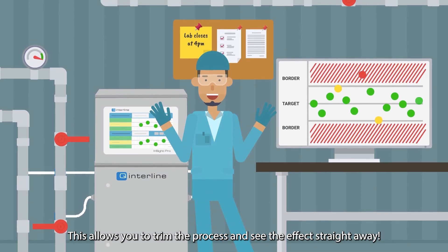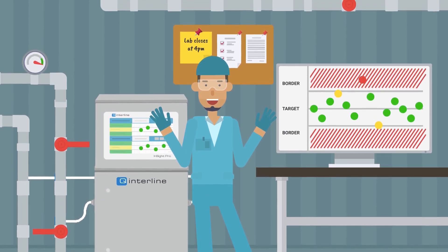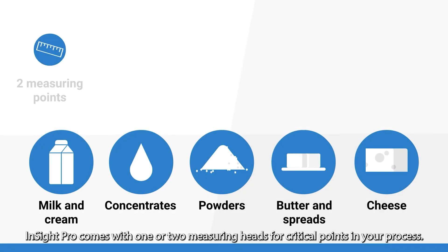This allows you to trim the process and see the effects straight away. Insight Pro comes with one or two measuring heads for critical points in your process.